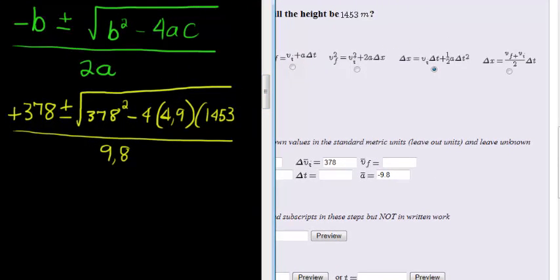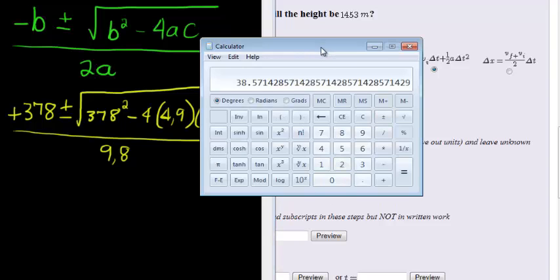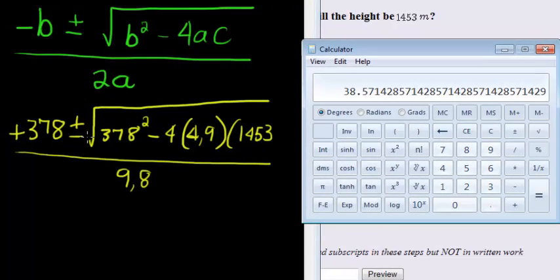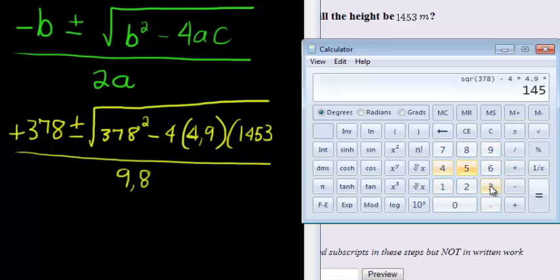To do that, I'm first going to solve the interior of the square root. So I've got 378 squared minus 4 times 4.9 times 1453. So the inside of the square root gives me 114050.2. That means the square root of that, if I take the square root of that, I get 338.238.